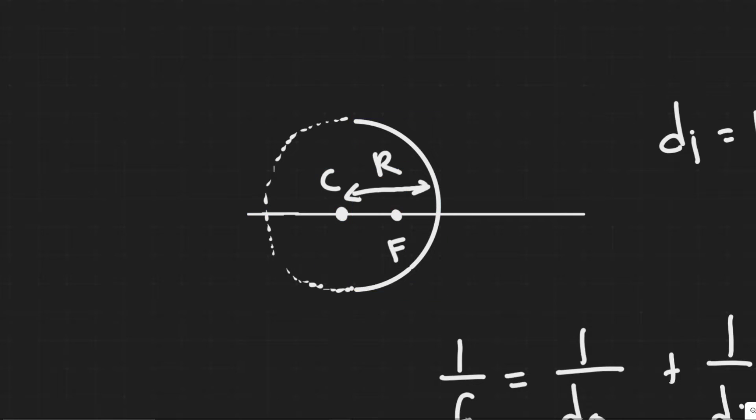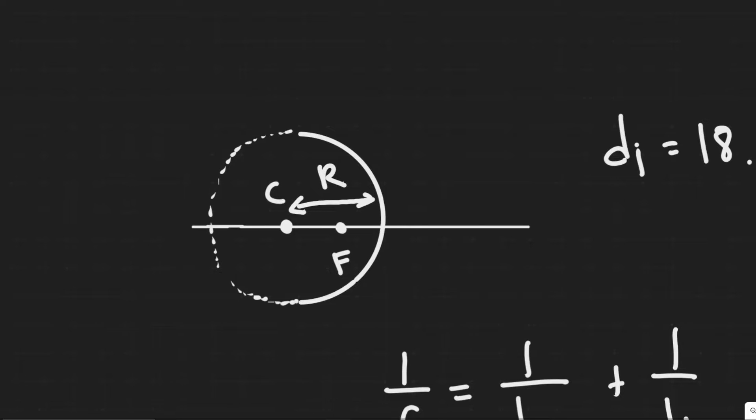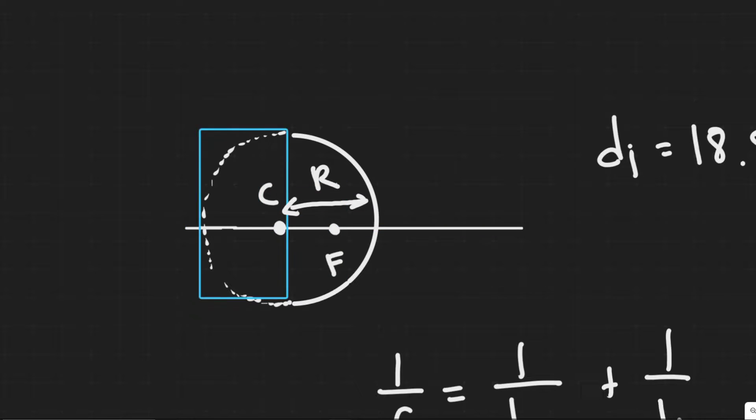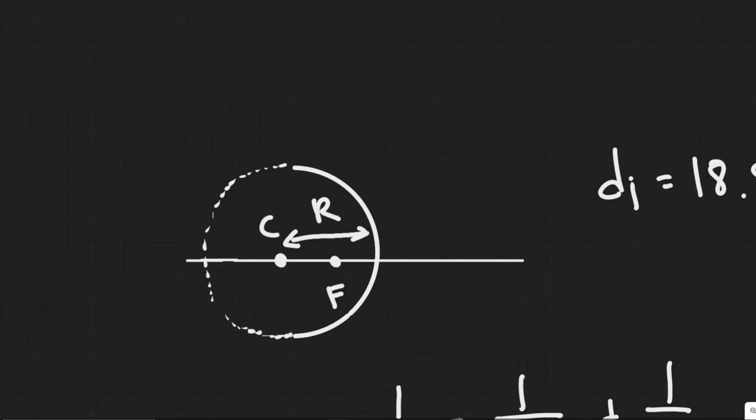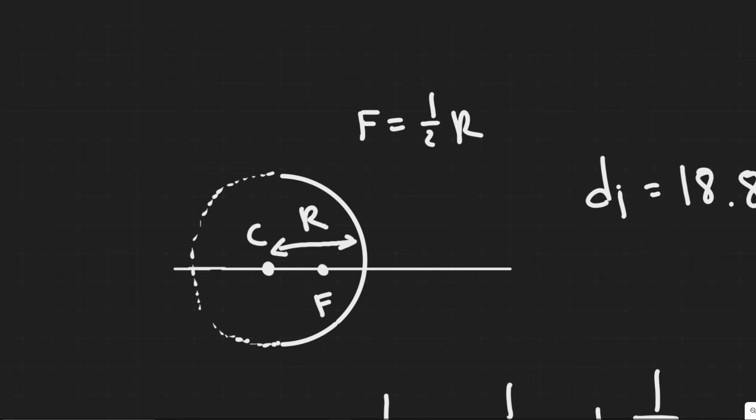And so this C represents the center of curvature, that's what we call it. So basically R is the distance from the center of curvature to the lens here. And this value F, F is called the focal length. The focal length is equal to half of the radius. It's basically just halfway in between. So the focal length is just half the radius since it's in the middle right here.